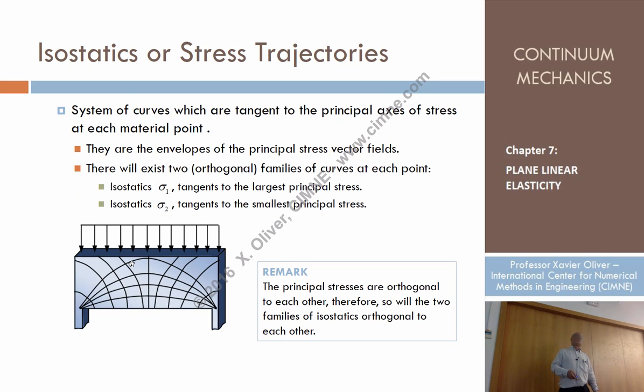What are the isostatic lines? They are the envelopes of the principal stresses. We know that at every point we have two principal stresses which are orthogonal to each other. If we trace the envelopes, we can obtain a family of orthogonal curves which provides information about how the stresses are transmitted, for instance in this deep beam from the support to the other support.